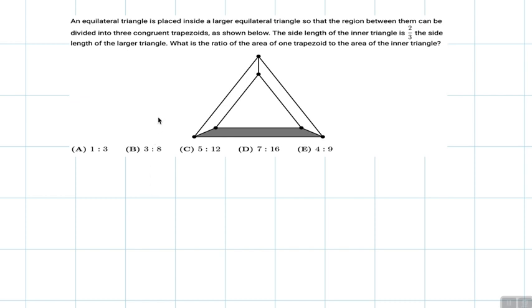An equilateral triangle is placed inside a larger equilateral triangle so that the region between them can be divided into three congruent trapezoids as shown below. The side length of the inner triangle is two-thirds the side length of the larger triangle. What is the ratio of the area of one trapezoid to the area of the inner triangle?